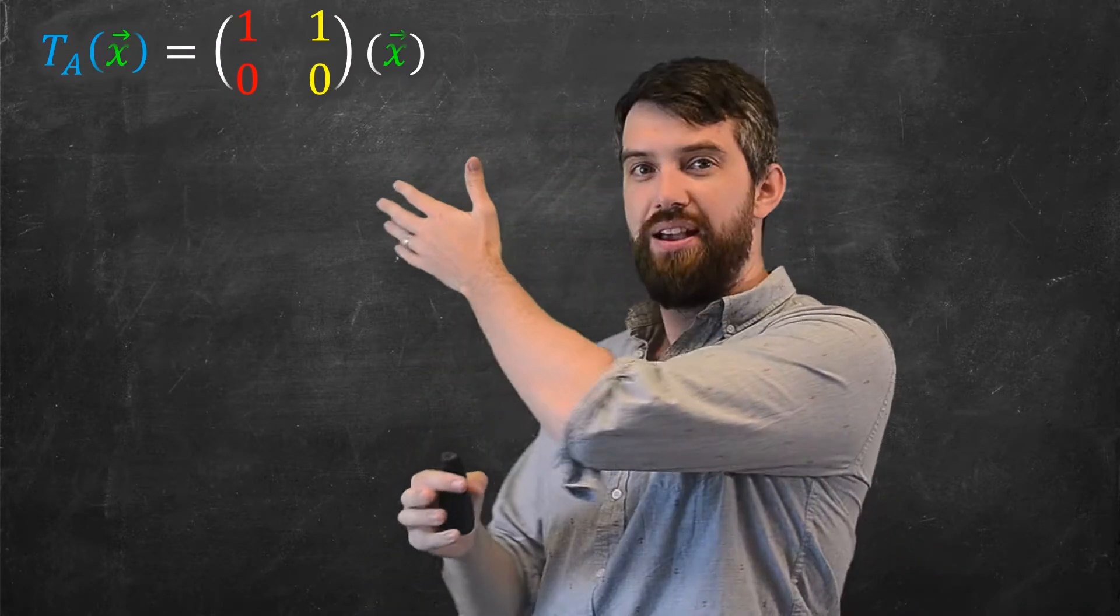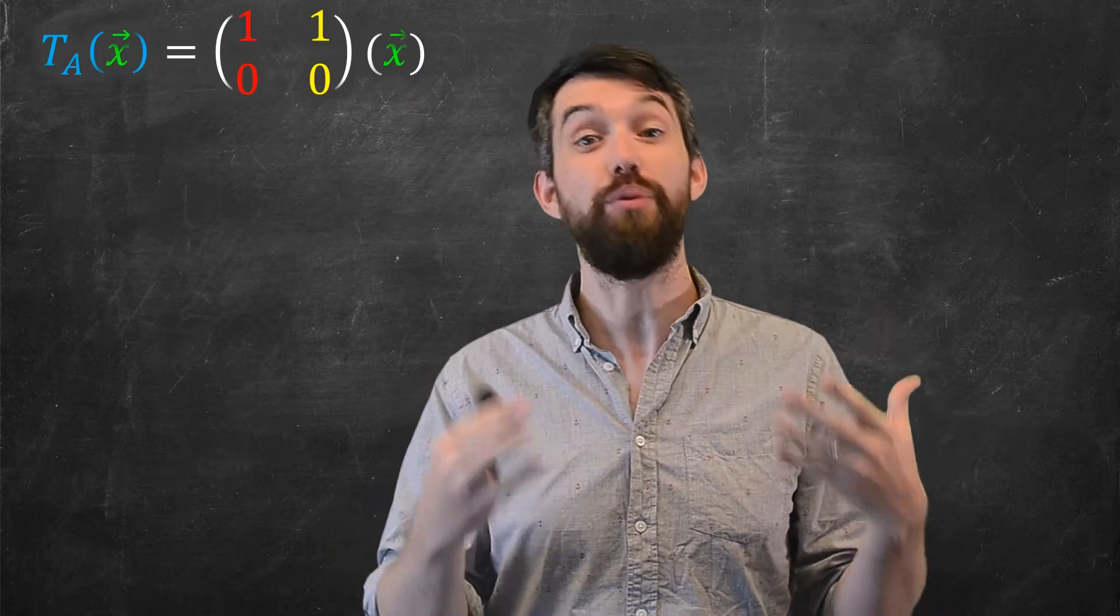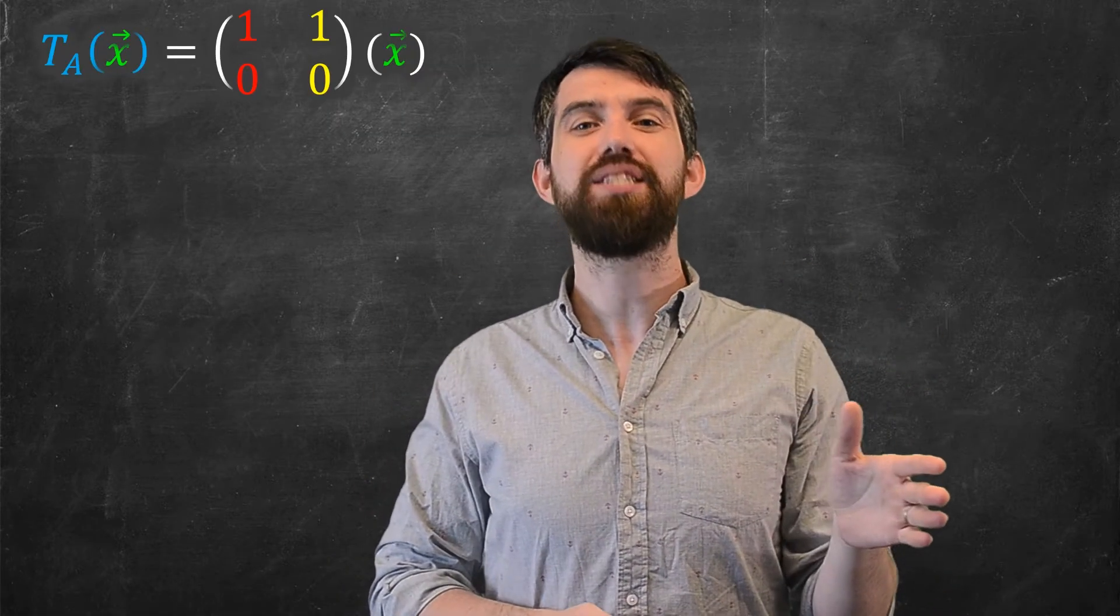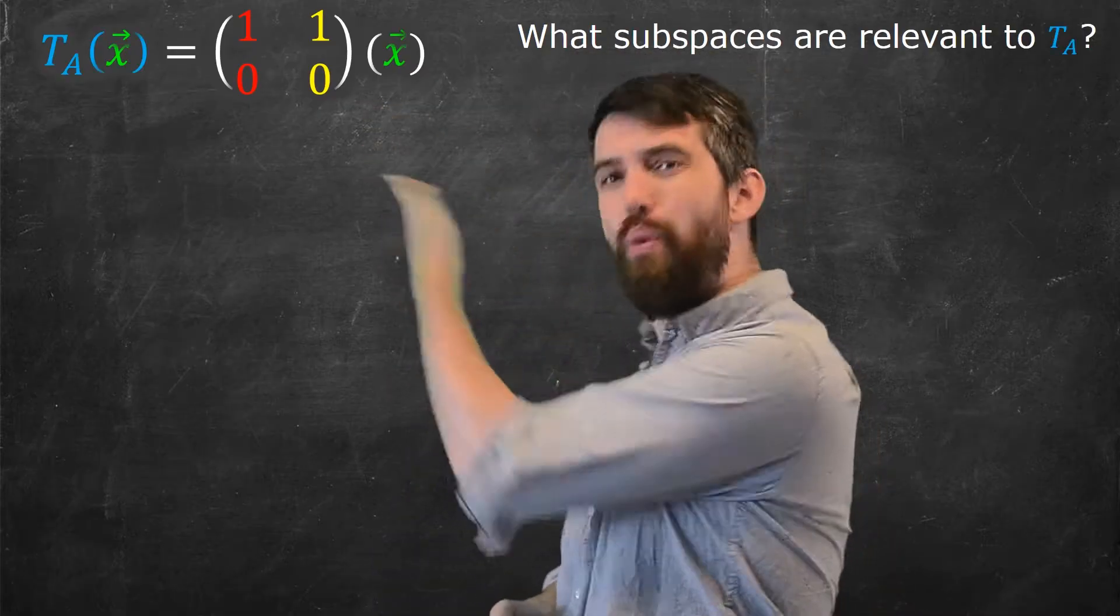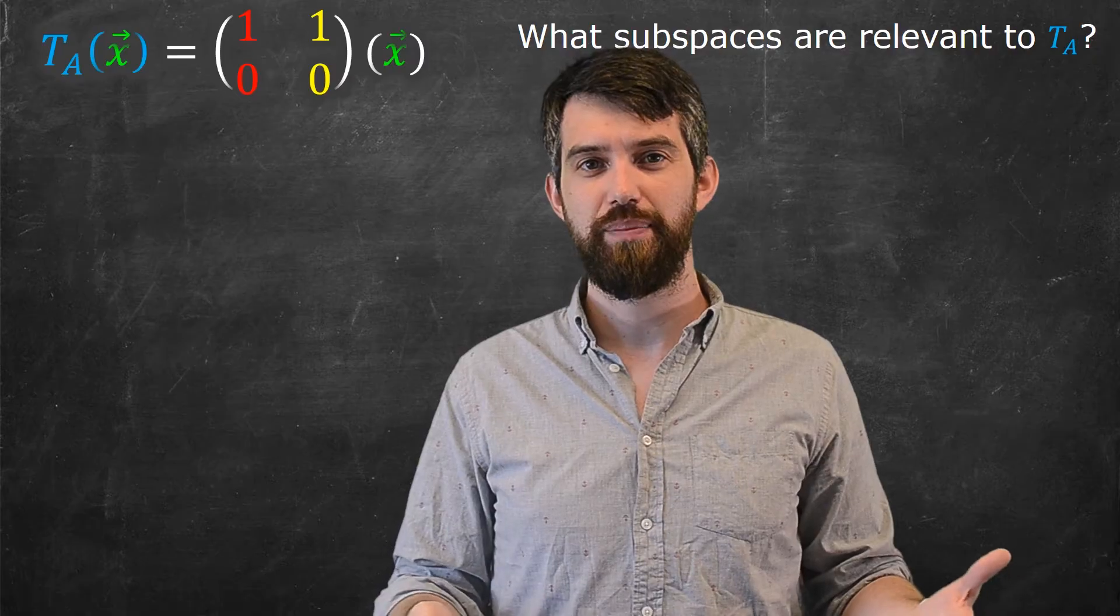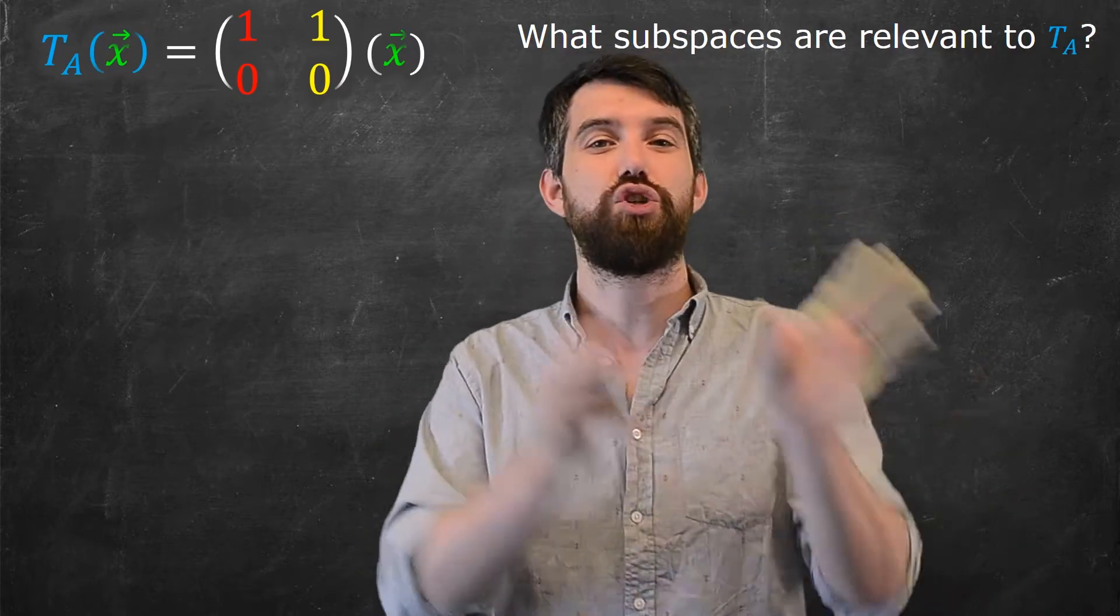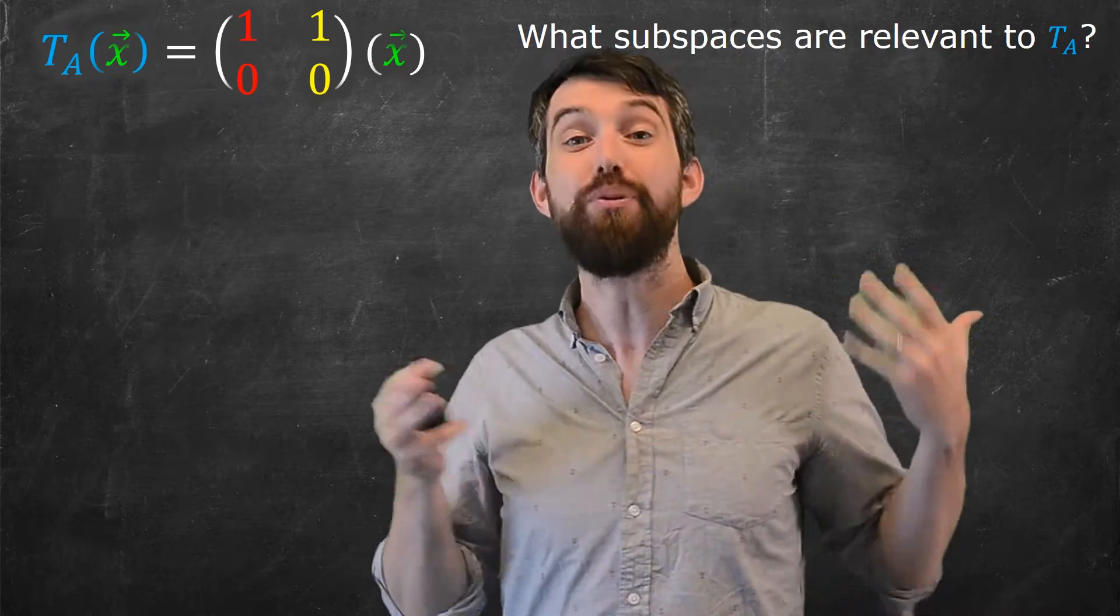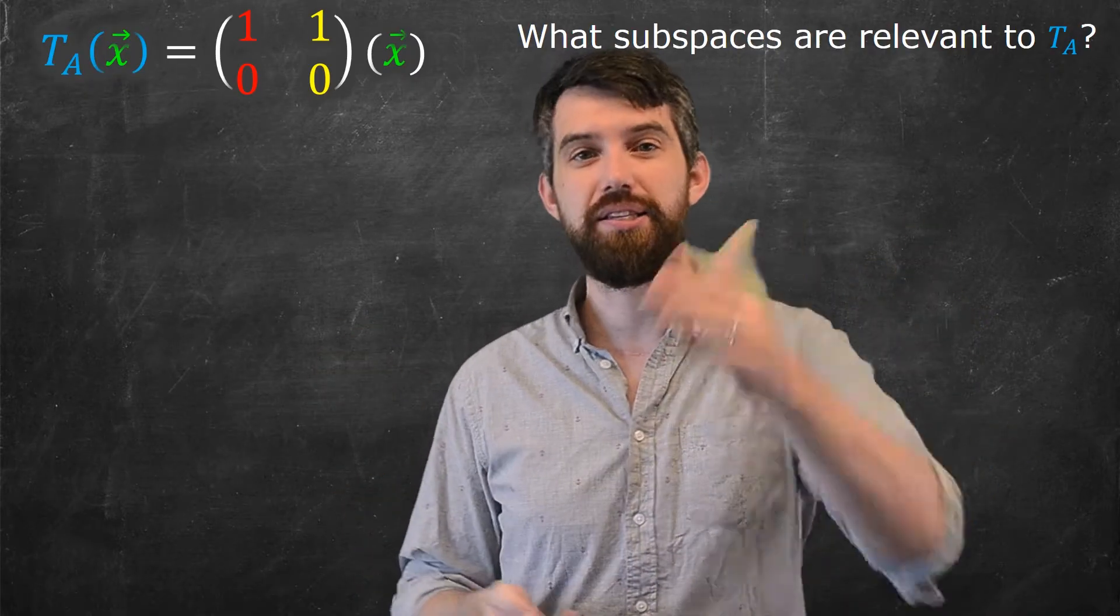Consider some matrix A and the transformation that it represents. The question is, what are the various subspaces that relate to this transformation, that relate to this matrix? It turns out there are two very natural subspaces that every single matrix A has that represent important things to us in the study of transformations.